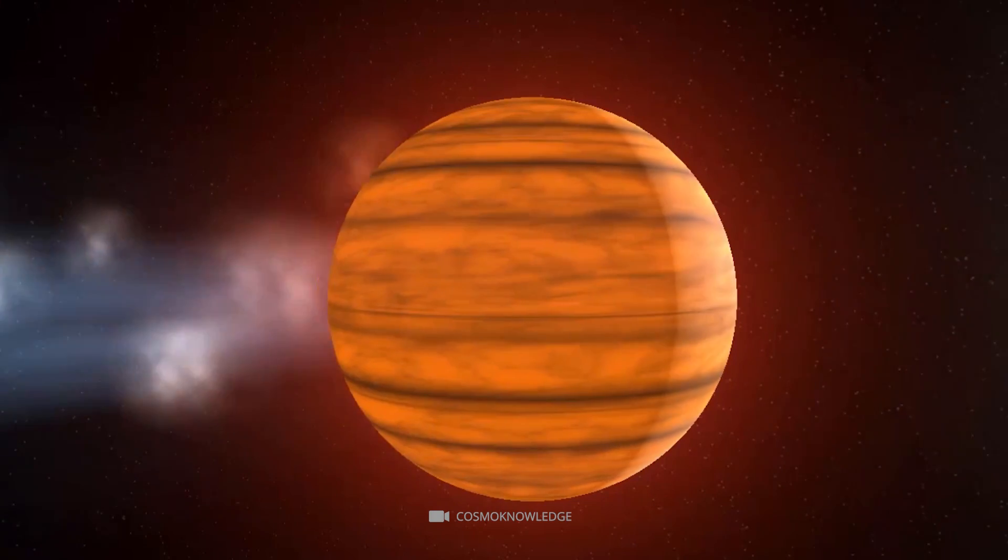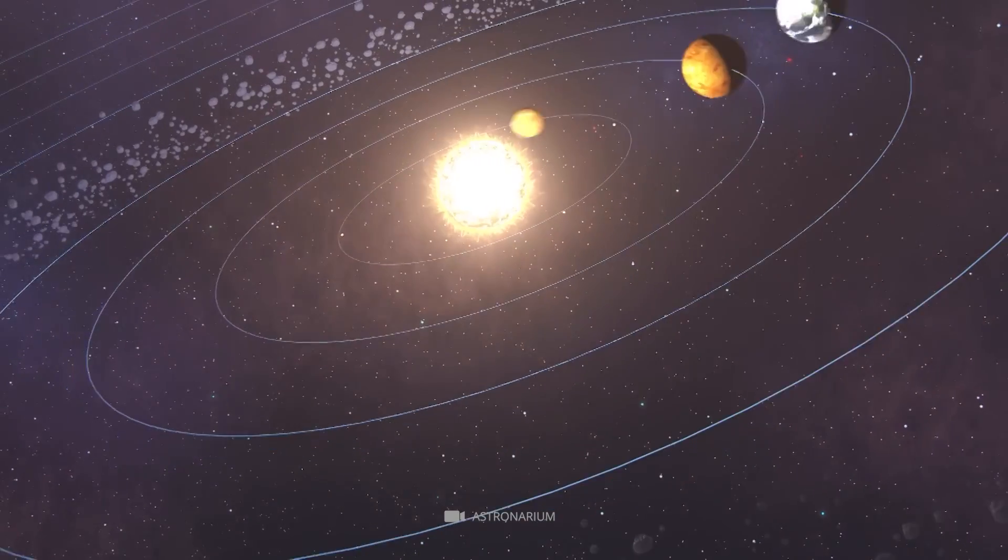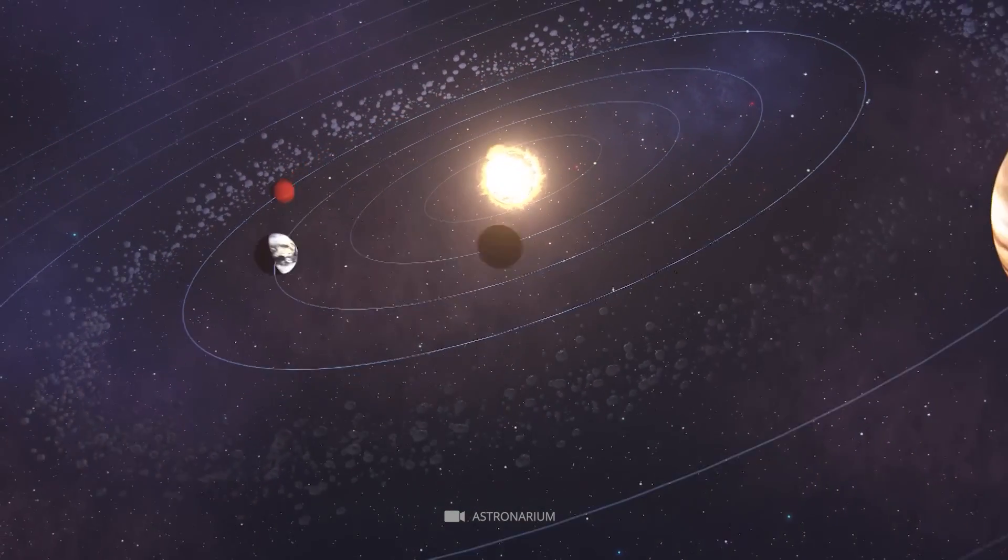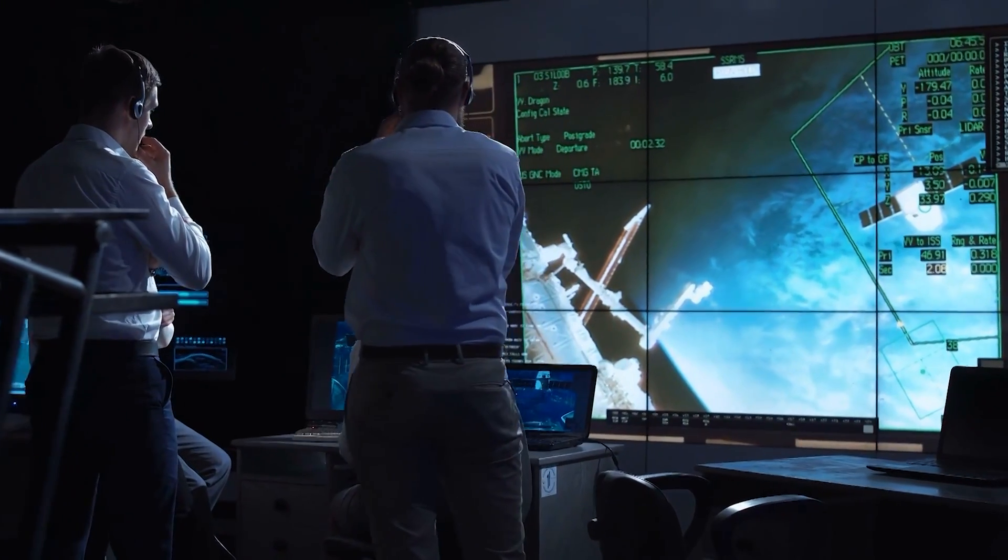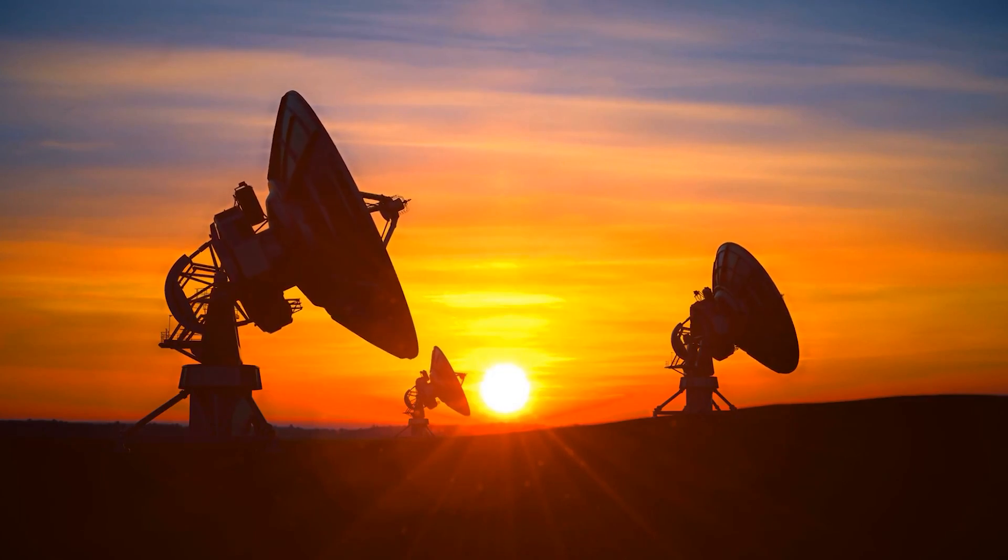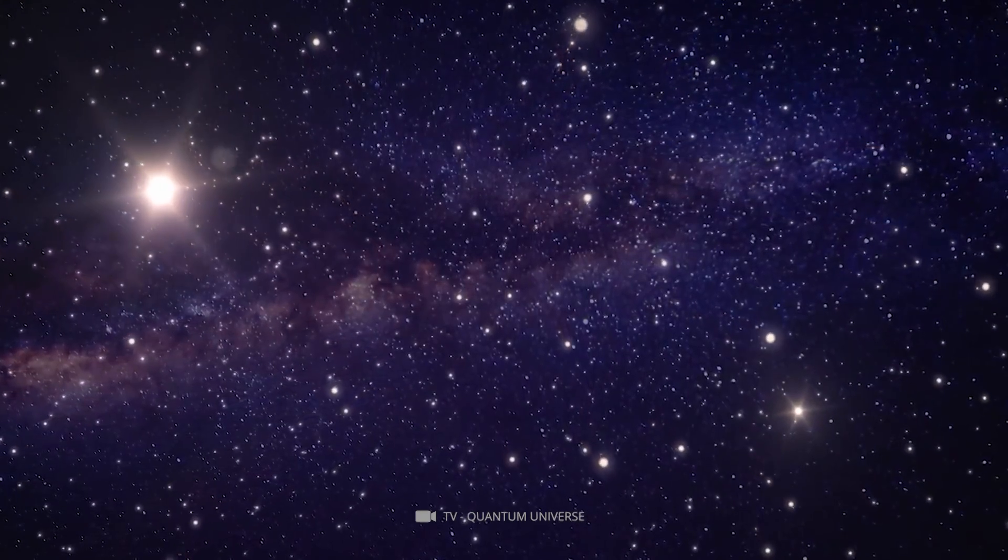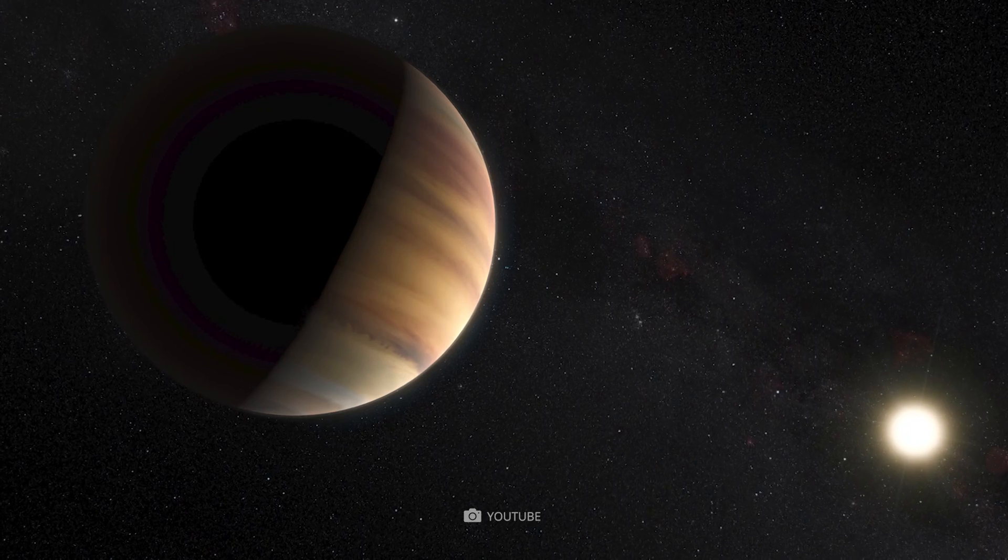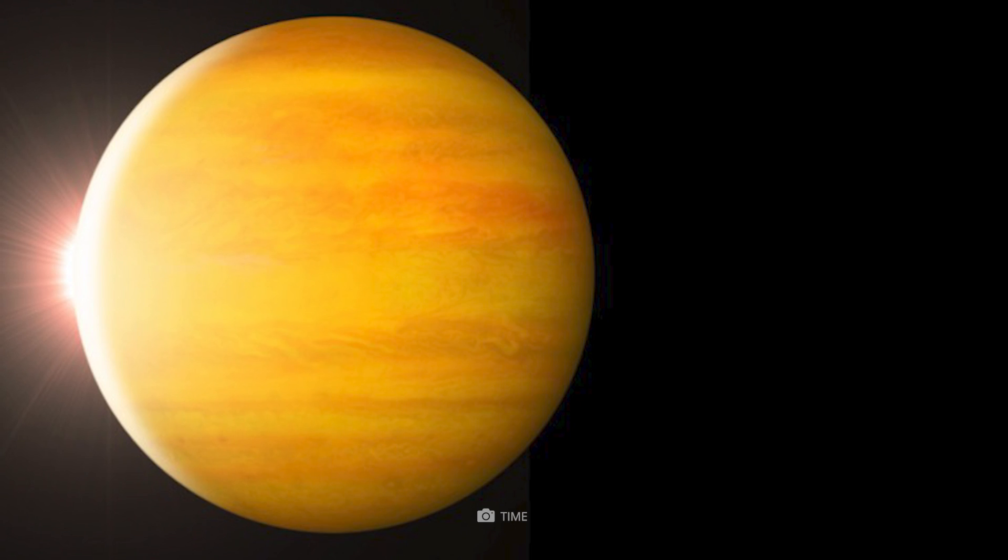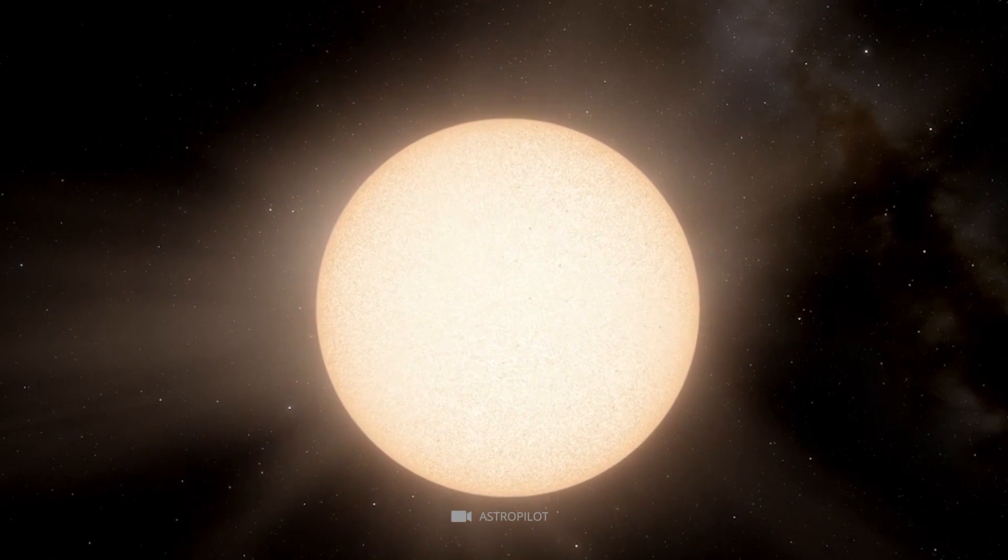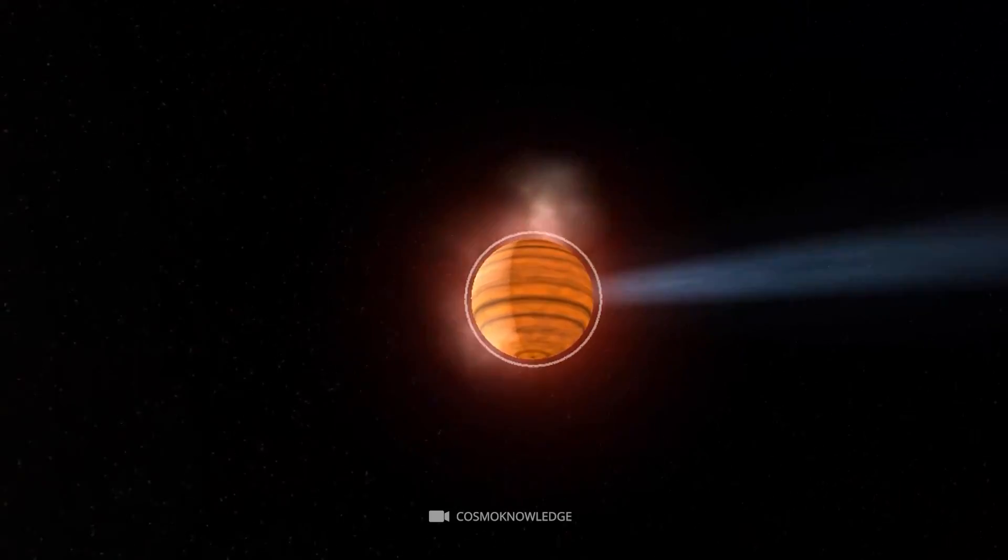The main reason 51 Pegasi B made such a huge impact on astronomical research is that it was the first exoplanet found orbiting a main-sequence star, our sun-like 51 Pegasi. This groundbreaking discovery opened up many possibilities for further exploration and shed light on how planetary systems are created. Unfortunately, 51 Pegasi B is not considered habitable due to its high surface temperature and lack of atmosphere. Its average temperature is estimated to be between 1,000 and 2,000 degrees Celsius.